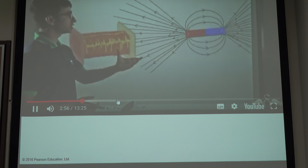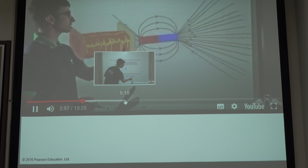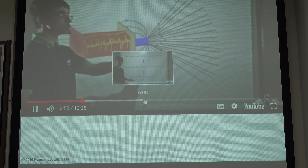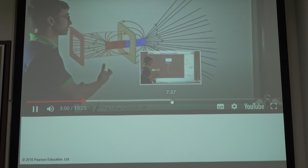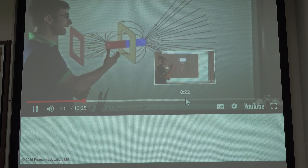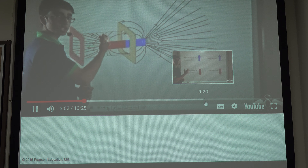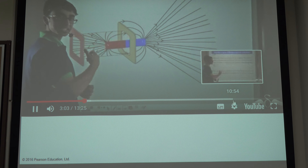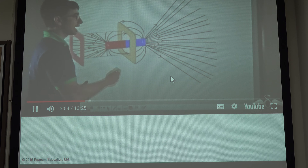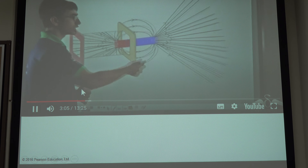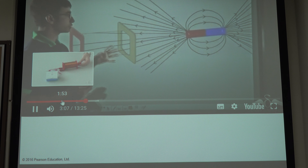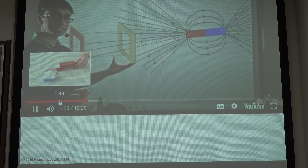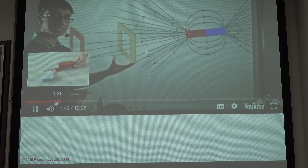As you can see, once the magnet is moved into the coil, the number of magnetic field lines through the coil increases. And when it is moved away from the coil, the number of magnetic field lines decreases. I was looking for this experiment.